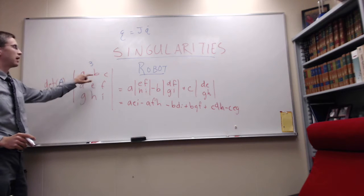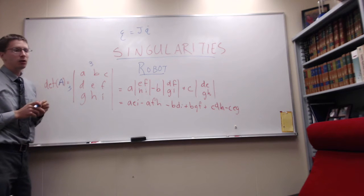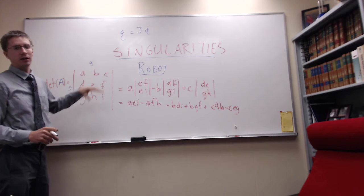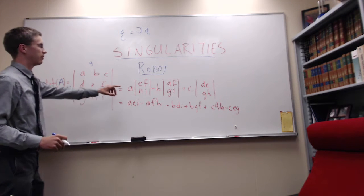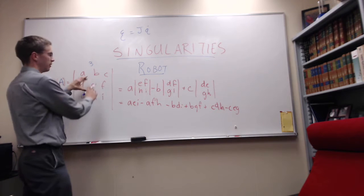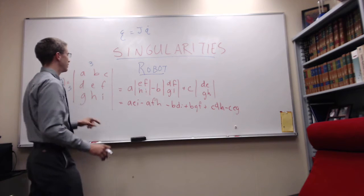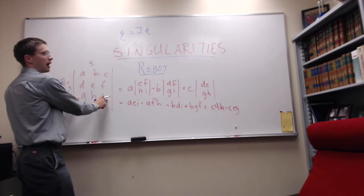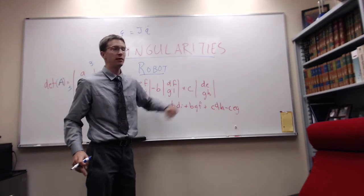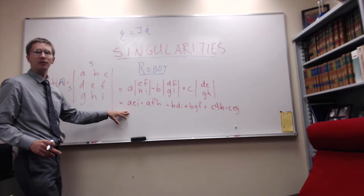We can just label these as ABCDEFGHI. The determinant of this matrix, you can expand along any column or row, but if we expand along the top row, is A times the determinant of the remaining co-matrix EFHI minus B times DFGI plus C times DEGH. And if you work that out, then you have six terms, 3 positive and 3 negative.